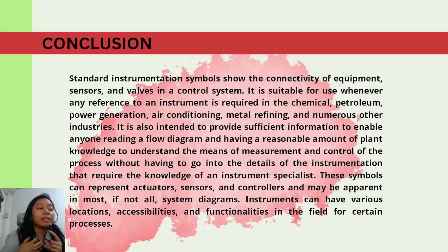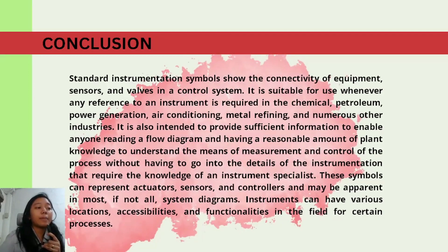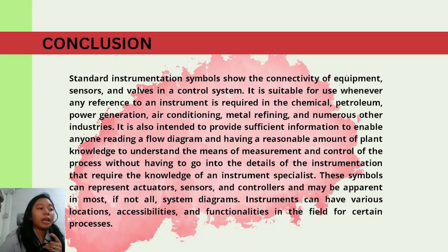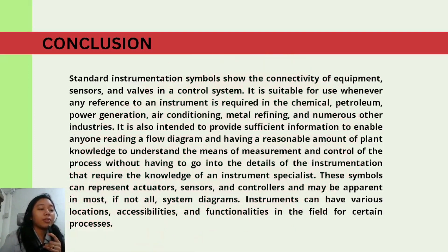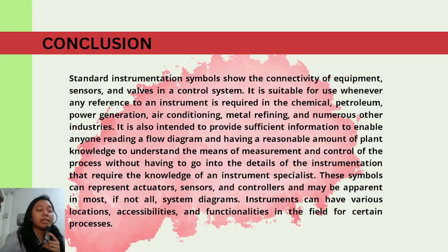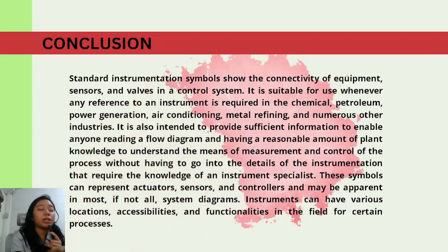In conclusion, standard instrumentation symbols show the connectivity of equipment, sensors, and valves in a control system. They are suitable for use whenever any reference to an instrument is required in the chemical, petroleum, power generation, air conditioning, metal refining, and numerous other industries. These symbols are intended to provide sufficient information to enable anyone reading a flow diagram with reasonable plant knowledge to understand the means of measurement and control of the process, without needing the detailed knowledge of an instrument specialist. These symbols can represent actuators, sensors, and controllers, and may be apparent in most, if not all, system diagrams. Instruments can have various locations, accessibilities, and functionalities in the field for certain processes. Thank you.